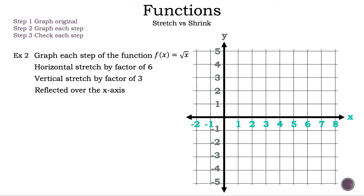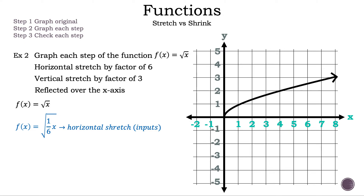Now let's move on to example 2. The question: graph each step of the function where we start with f(x) = √x and it has a horizontal stretch by a factor of 6, a vertical stretch by a factor of 3, and is reflected over the x-axis. First, let's write down f(x) = √x since that is the original function. Now let's graph f(x) = √x. Then let's write down the next step: f(x) = √(1/6 · x).